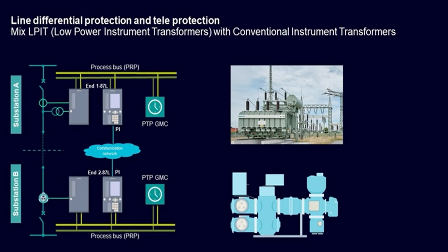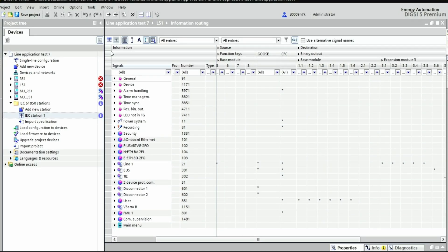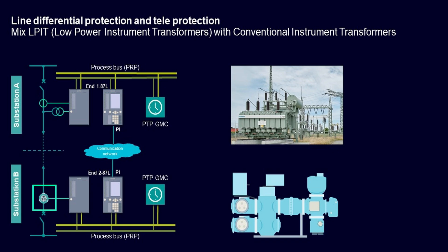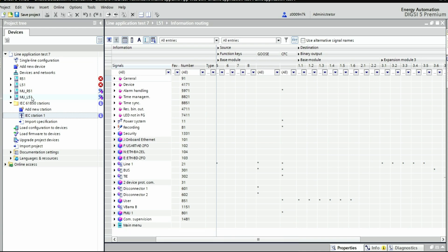Line differential protection requires sharing information between two different stations. CProtek 5-7SL87 supports the use of conventional instrument transformers on one end connected to a merging unit that supports IEC 61-850-9-2 sampled measurement values, and on the other end the use of low-power instrument transformers (LPIT) connected to a merging unit also supporting IEC 61-850-9-2 sampled measurement values. Based on that configuration, the line differential protection 87L can be executed in a secure and stable way. We open Dixie software to configure the CProtek 5 devices and the merging unit. One merging unit has a low-power instrument transformer LPIT from Siemens Energy, and the second merging unit is connected to a conventional instrument transformer. Please refer to the first process bus video, transformer protection application with process bus.